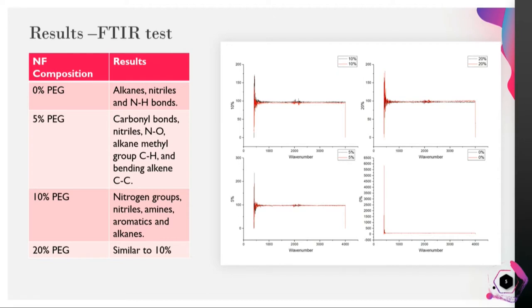For my 0% PEG nanofiber, I had alkanes, nitriles, and nitrogen-hydrogen bonds. For my 5% PEG in respect to PAN nanofiber, I had carbonyl bonds, nitriles, nitrogen-oxygen, alkene-methyl group, and bending alkane. My 10% and 20% nanofibers were similar in respect to their functional groups. They showed nitrogen groups, nitriles, amines, aromatics, and alkanes.